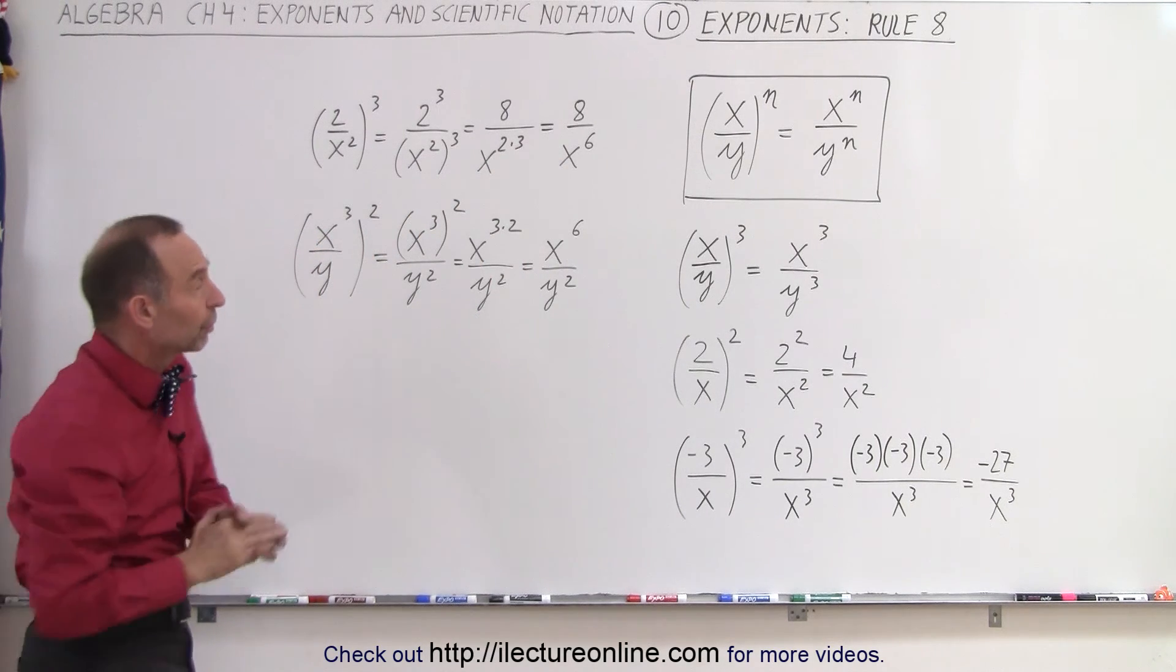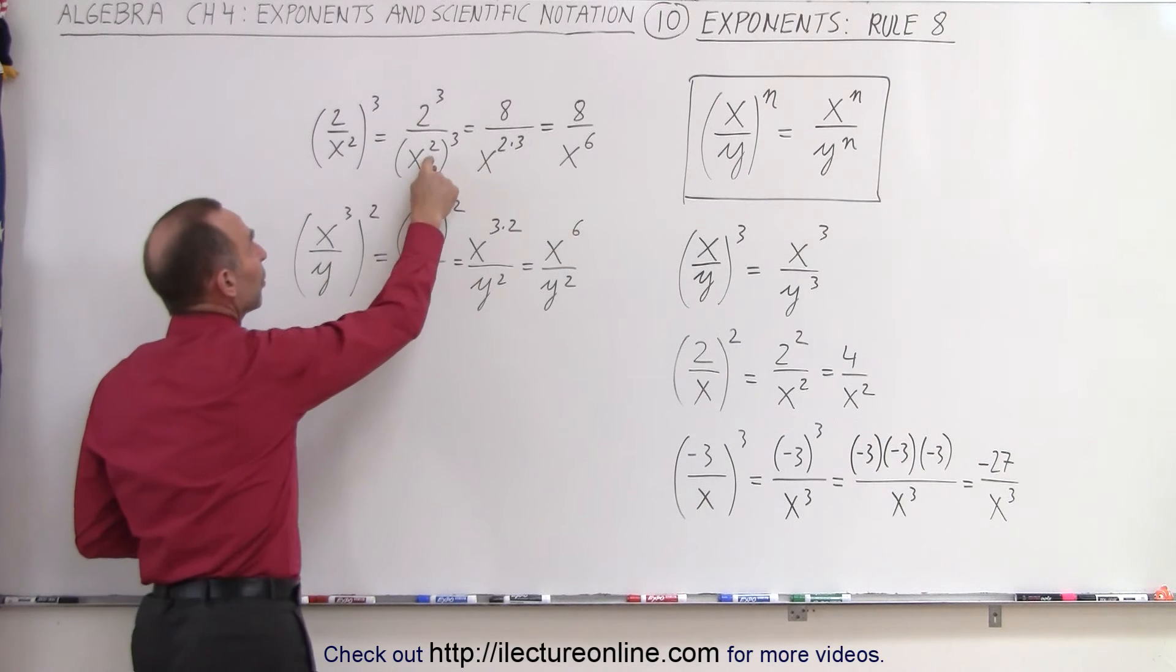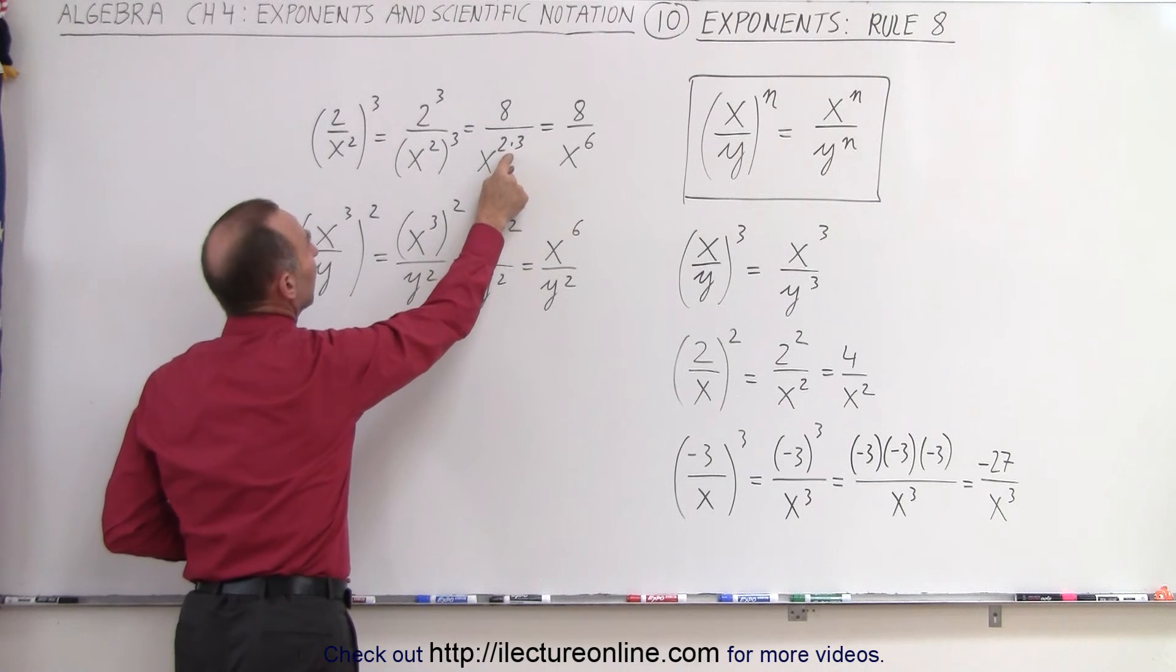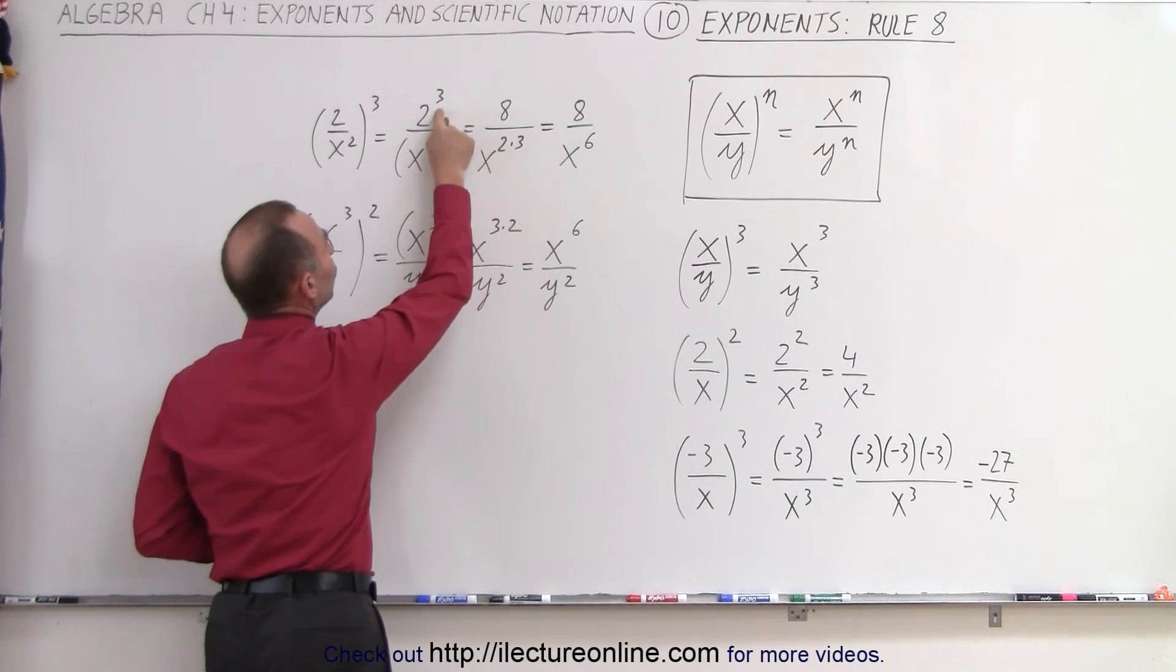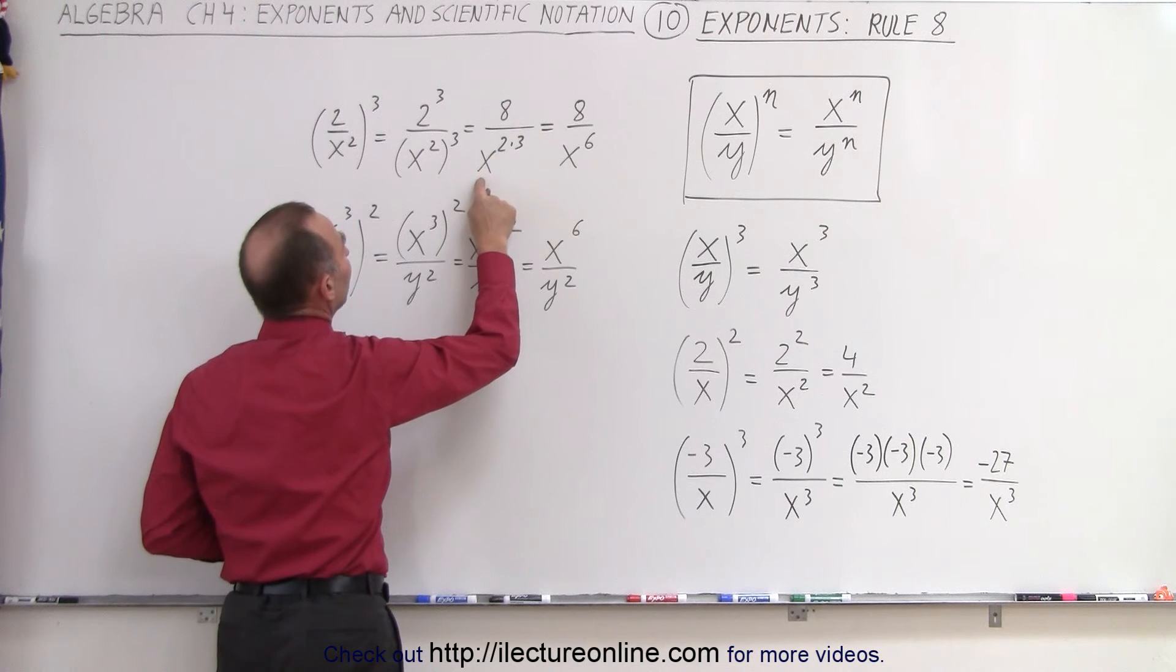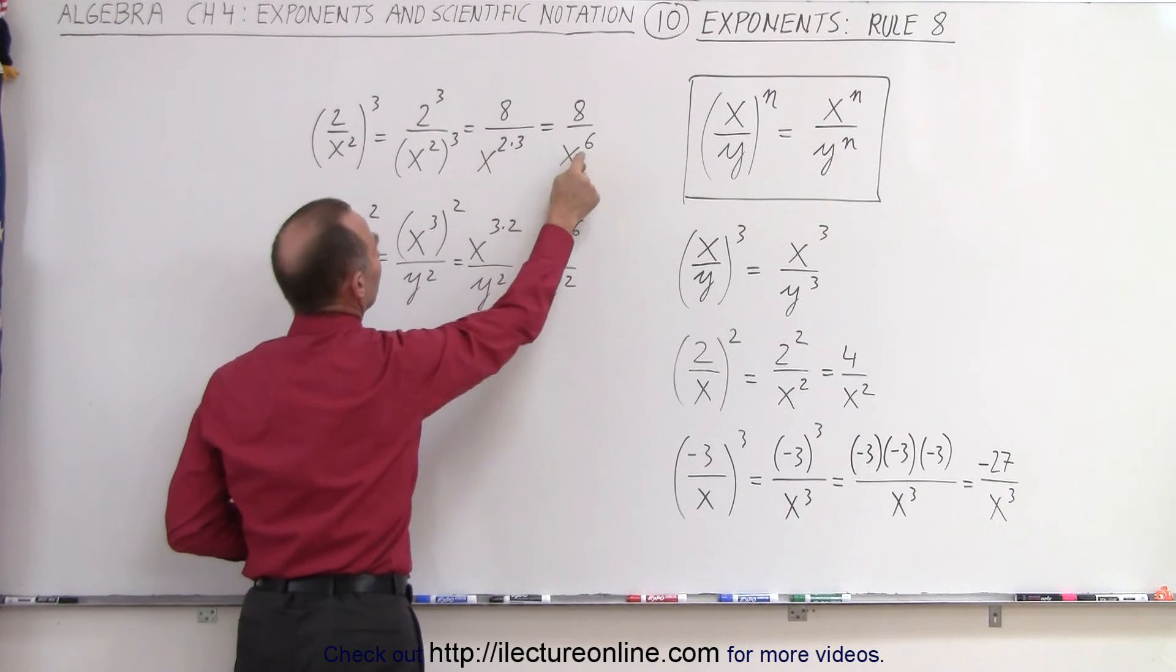Or we can apply the rule we learned before, where if we have an exponent raised to an exponent, we multiply exponents. So this becomes 2 cubed, which is 8, divided by x to the 2 times 3, or x to the sixth power.